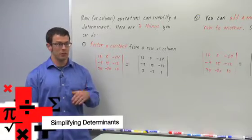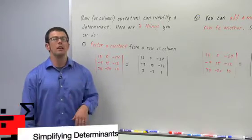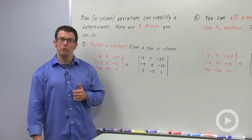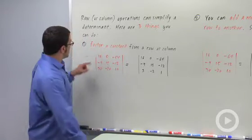Computing determinants can be really complicated when you're dealing with 3 by 3 determinants or higher. And so you definitely want to be able to simplify a determinant before computing it. And there are three rules that allow you to do so. Here's the first.